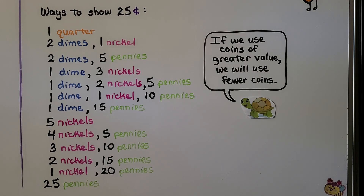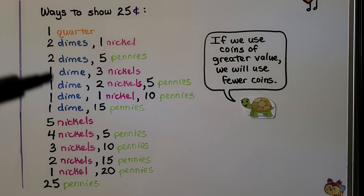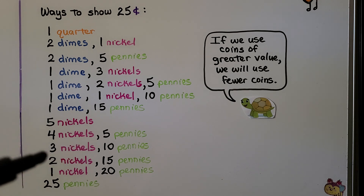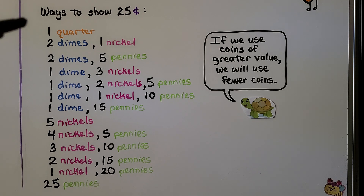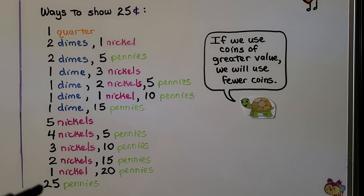These are all the different ways to show 25 cents: one quarter, or combinations of dimes and nickels, dimes and pennies, just nickels, nickels and pennies, or all pennies. If we use coins of greater value like a quarter, we use fewer coins. Pennies are only one cent, so we'd have to use 25 of them. If we use coins of greater value, we will use fewer coins.